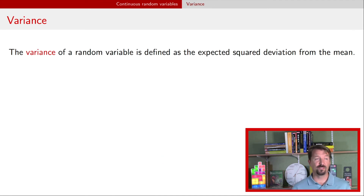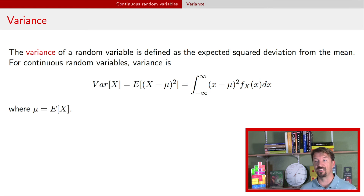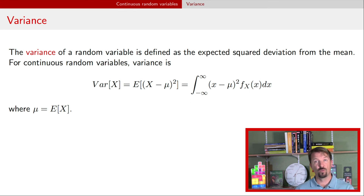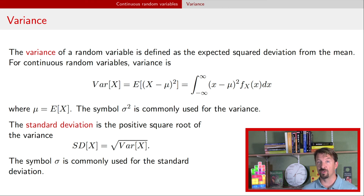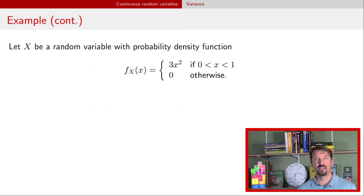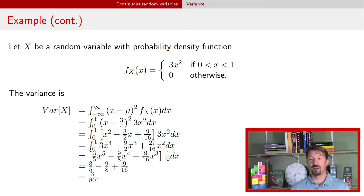Now let's talk about the variance. The variance has the same definition as before — it's the expected squared deviation from the mean. But just like with expectation, we now do an integral: it's (x − μ)² weighted by the probability density function, integrated over the whole real line. Mu is just the expected value, as with discrete random variables. We use sigma squared for variance and sigma for the standard deviation, which is the positive square root of the variance. Working through the math for our example, the variance for this particular random variable is 3/80.